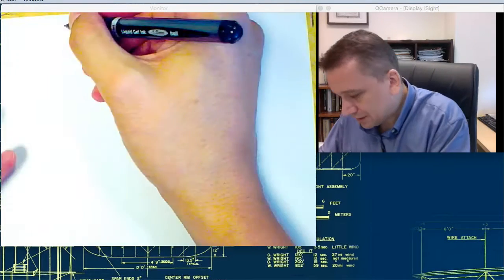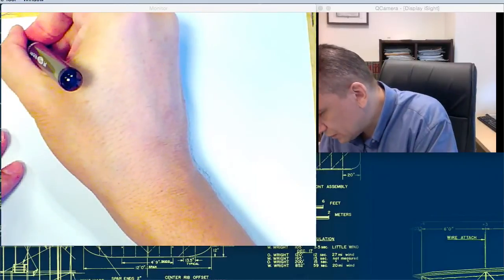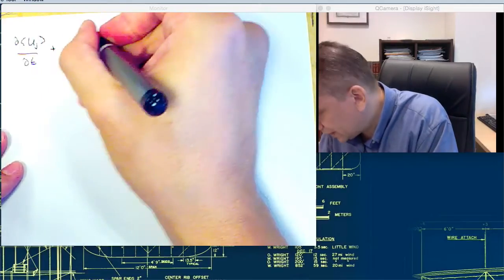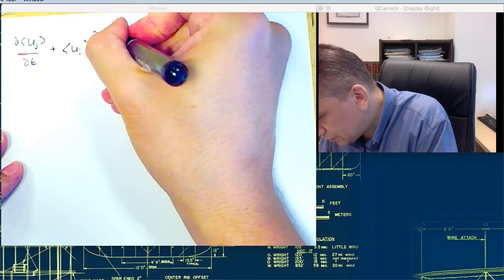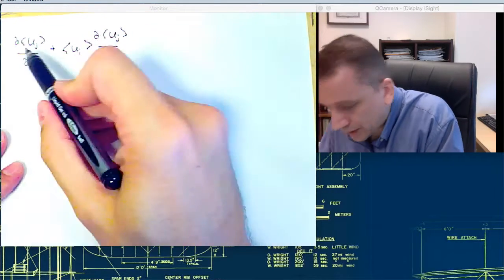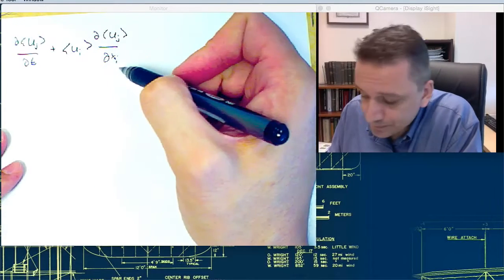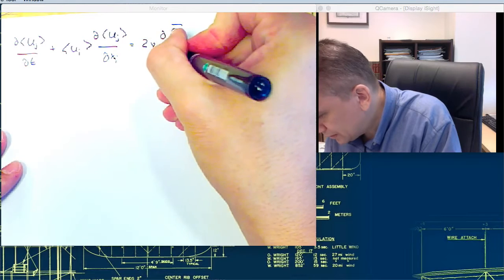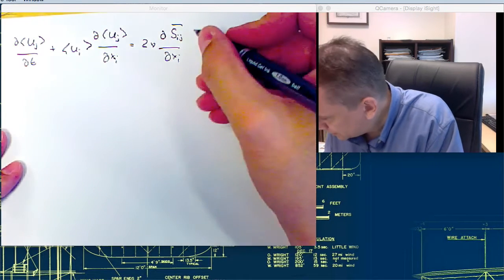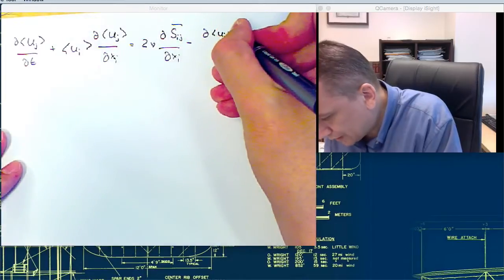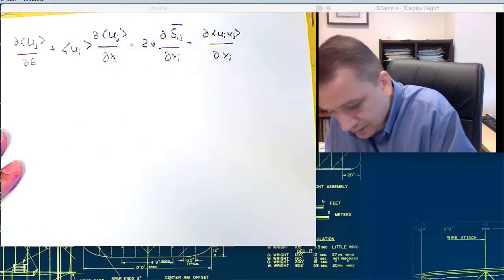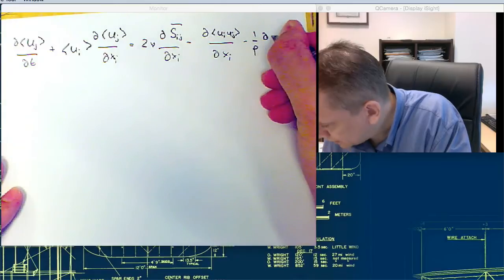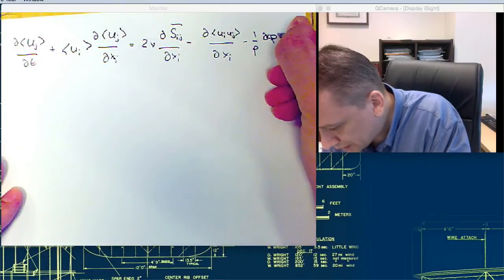I'm going to write out now the Rantz equation. So d uj dt plus ui d uj dx i. So I'm writing out now the total derivative, which is equal to nu dsij dx i minus d ui uj dx i minus 1 over rho dp dx j.